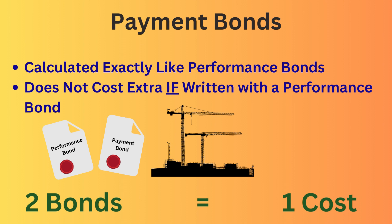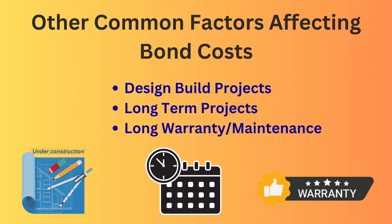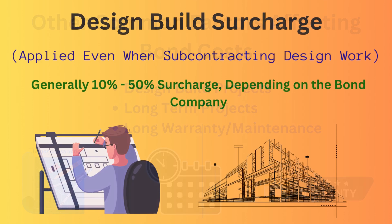Payment bond rates are calculated the exact same way as performance bond rates. However, there is only one premium when both bonds are written together. When a $1,000,000 project requires both a performance bond and payment bond, there is only one premium — in a sense, the project owner is getting twice the protection for one cost. However, only requiring one of these bonds does not reduce the cost. A performance bond with a payment bond is the same cost as a performance bond without one, and vice versa.